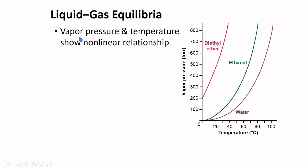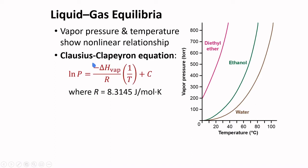The plot of vapor pressure and temperature show non-linear relationship. The Clausius-Clapeyron equation converts this non-linear relationship into a linear one, where R is the universal gas constant, 8.3145 joules per mole per kelvin.